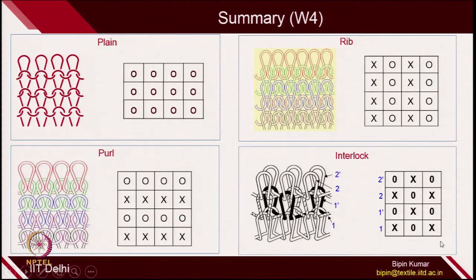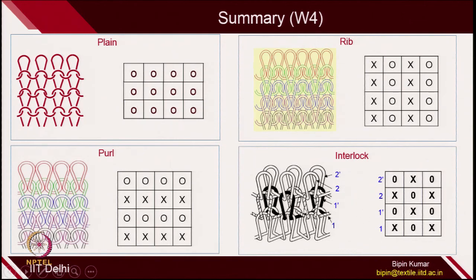In interlock, you are actually creating 2 ribbed designs in the same course, feeding 2 yarns. In the first feed, long butt needles are making technical front, while long butt needles of the back bed make technical back. In the second feed, they do the opposite — short butt needles of the front bed make technical back, and the other needles make technical front on the dial. So 2 ribs are actually intermeshed, giving us 4 fabric platforms where you can create any design.